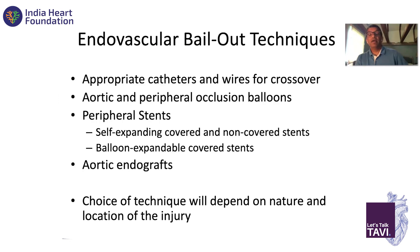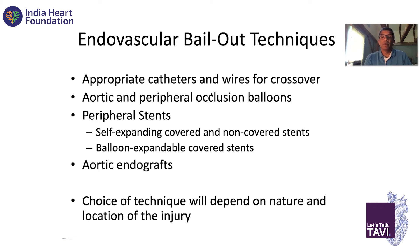If you do have complications, you need to know how to bail out. Make sure you have the appropriate catheters and wires, appropriate occlusion balloons, and be comfortable with peripheral stents — both self-expanding and balloon expandable — and aortic endografts. The choice of technique will depend on the nature of the complication.